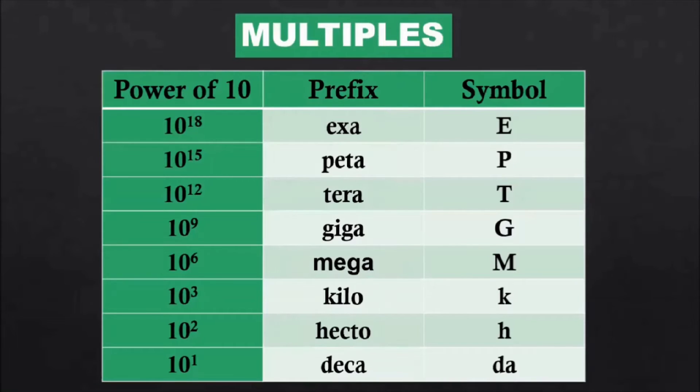First let's check multiples. Here I have made three columns: the first one is power of 10, then the prefix and the symbol. Let's do it in increasing order. 10 power 1: deka, symbol small da. 10 power 2: hecto, symbol h. 10 power 3: kilo, k. 10 power 6: mega, capital M. Remember, from here onwards all the letters are capital.